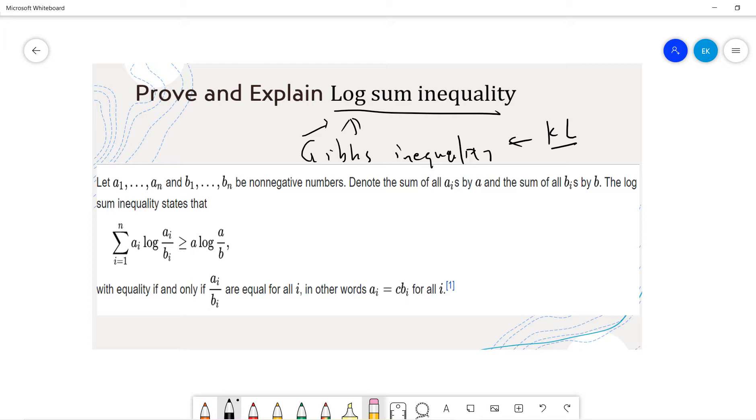So let's say a1 up to an and b1 up to bn be non-negative numbers, and the sum of ai is a, so a is the sum from i=1 to n of ai, and b is the sum from i=1 to n of bi.